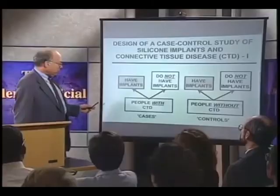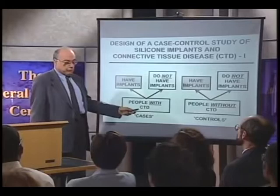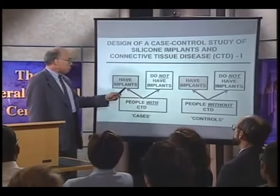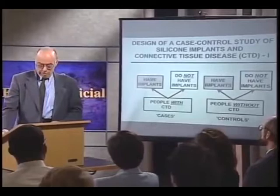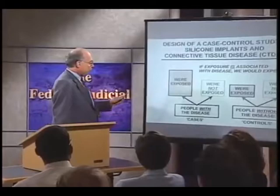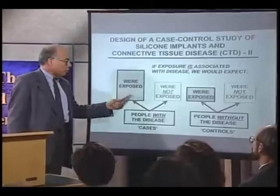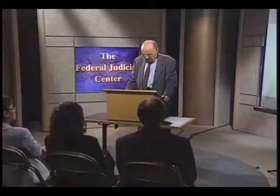Let's look at the implant question again. If we were doing a case-control study of implants, we would first identify a group of women with connective tissue disease and a comparison group without connective tissue disease. We would then determine what proportion of the women with connective tissue disease have a history of receiving implants compared to women without connective tissue disease. If exposure is associated with disease, we would expect a greater proportion of the women with the disease — the cases — to have had exposure than of the women without the disease, the controls.